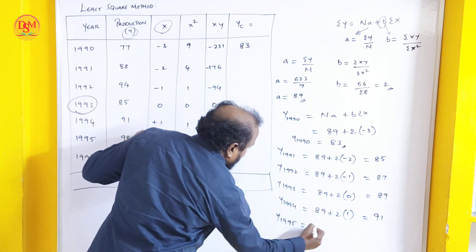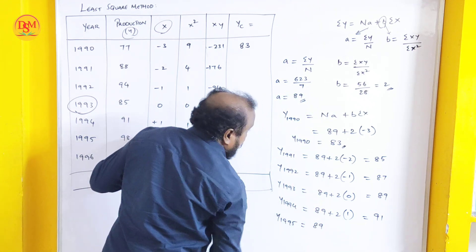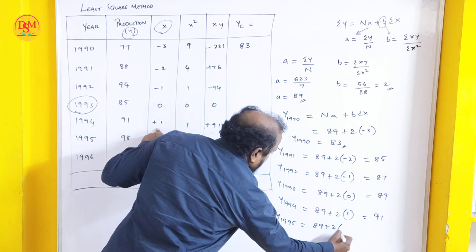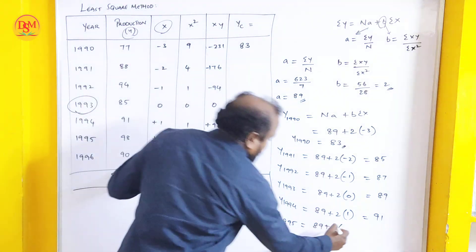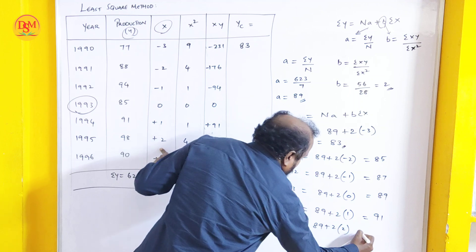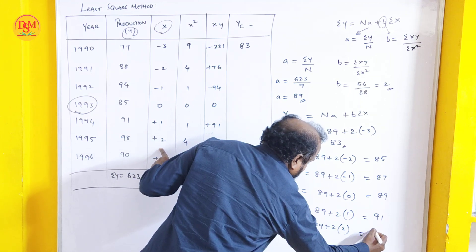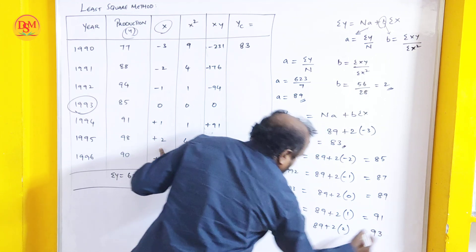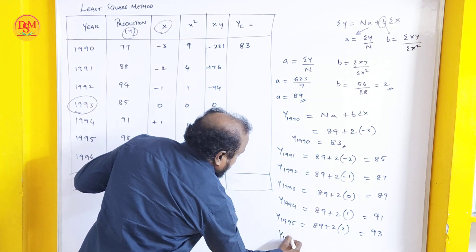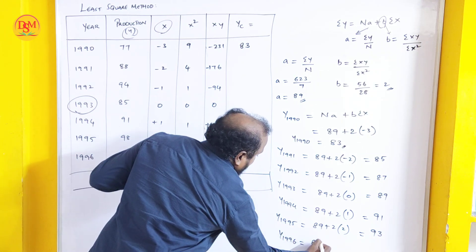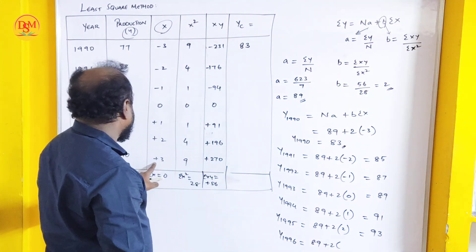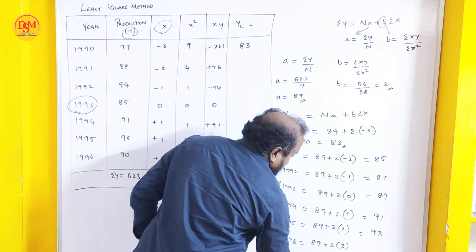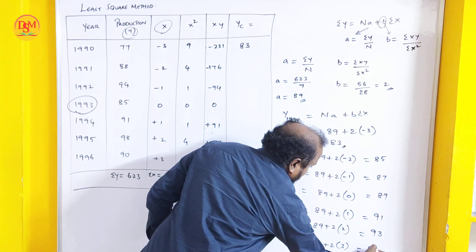For the year 1995, 89 is a value plus b value is 2. Sigma x value is 2. 89 plus 4 is 93. For the year 1996, 89 plus 2 and sigma x is plus 3. 2 into 3 is 6. 89 plus 6 is 95.